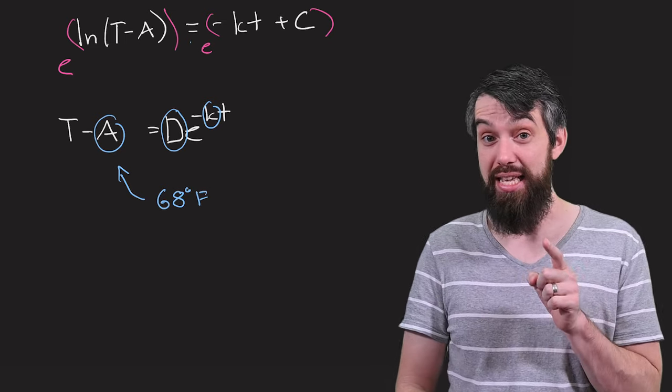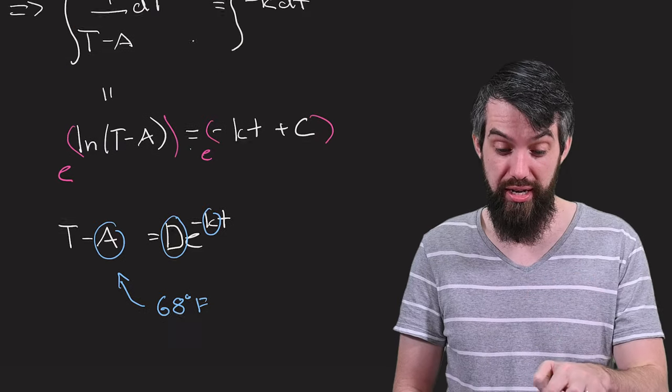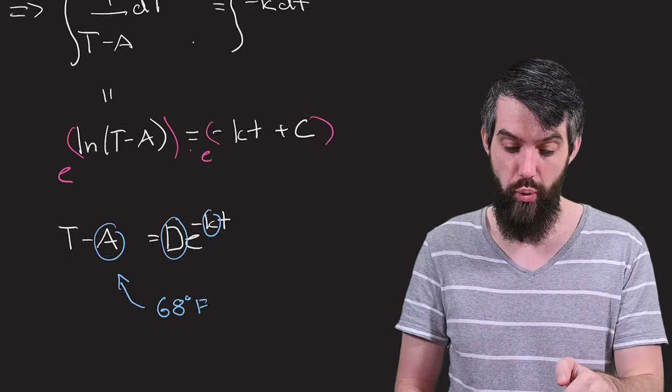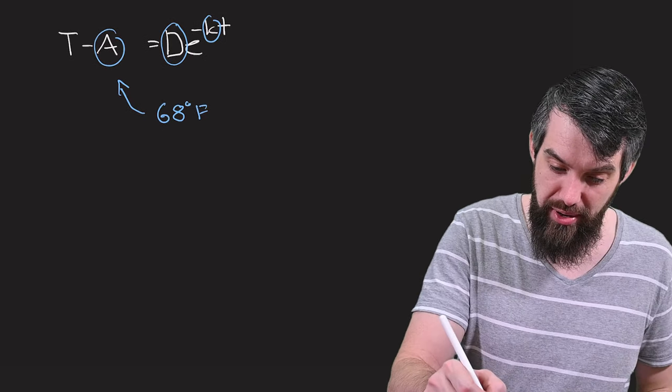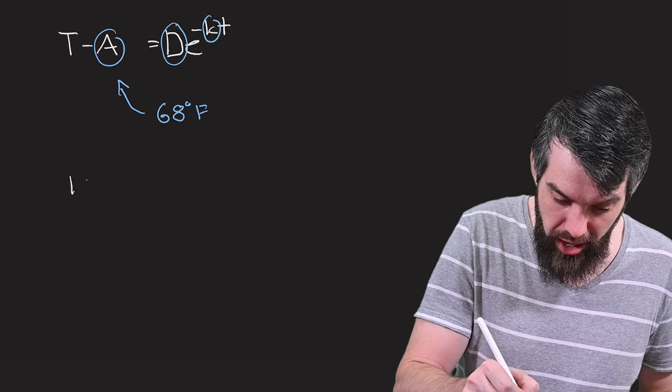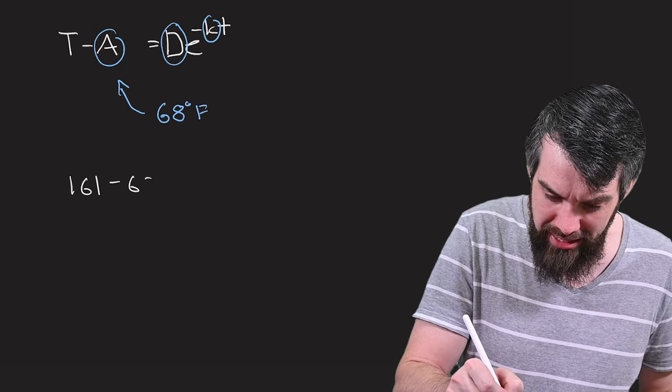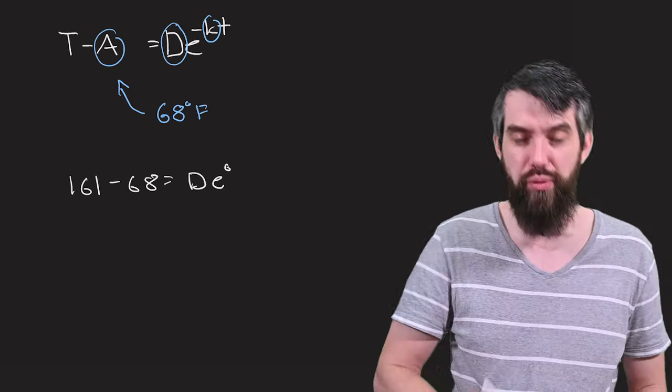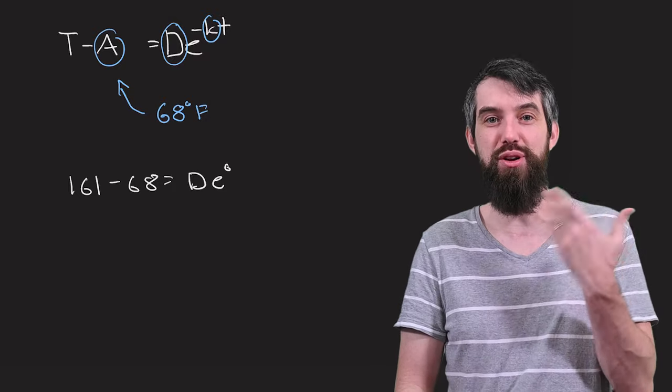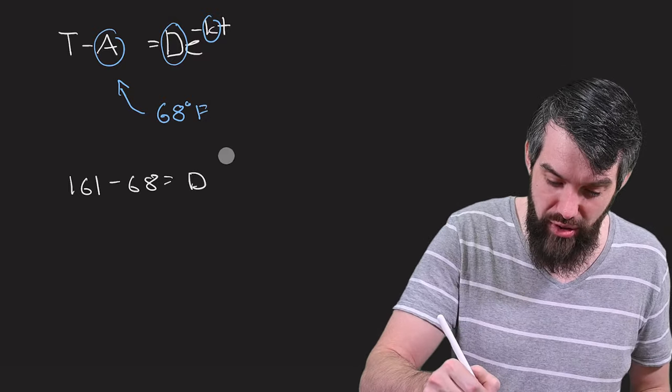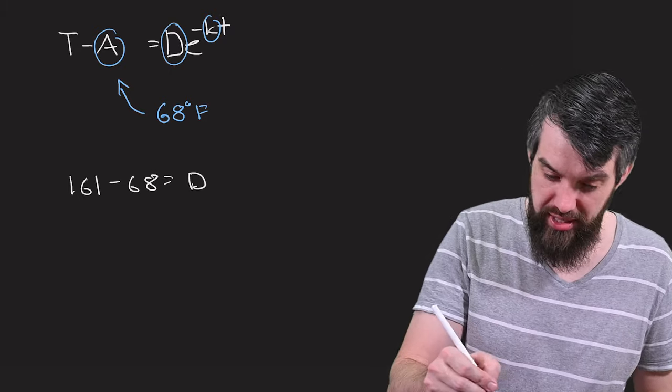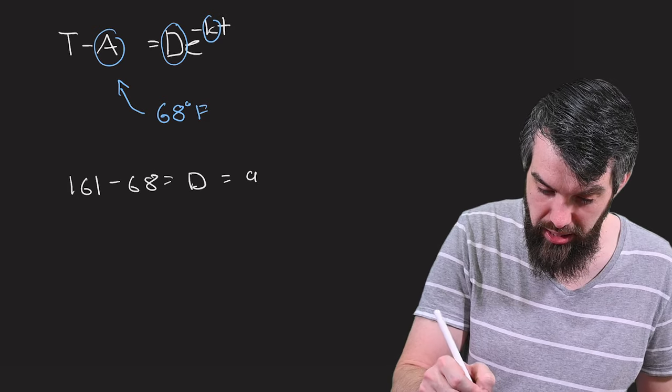To figure out the D, I could plug in the initial condition that we've seen at the beginning, that T was 161 degrees Fahrenheit. So let me try that. T was 161 minus 68 is equal to D times E to the K times 0. I don't know what K is, but it doesn't matter, it's multiplied by 0. And E to the 0, in fact, I can even erase it because it's just equal to 1. So now I know that this D here is equal to, well, 93.